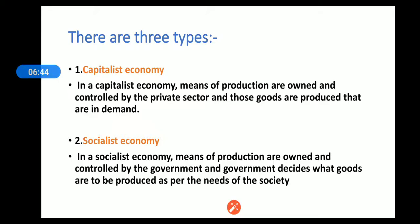In a socialist economy, means of production are owned and controlled by the government. The government decides what goods are to be produced as per the needs of society — whether defense, food, or medicine. The government's main motive is not profit but social welfare. In contrast, in a capitalist economy, means of production are owned and controlled by the private sector.